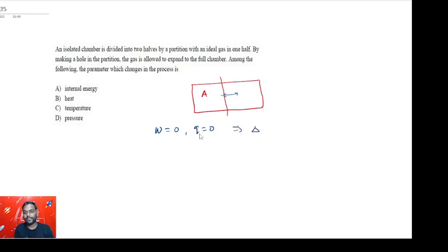From the first law of thermodynamics, ΔU which is equal to Q plus W. As both Q and W are zero, ΔU will also be zero. That means temperature change will also be zero.